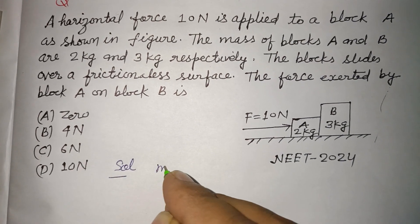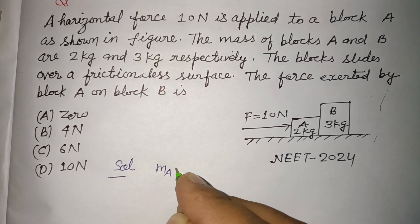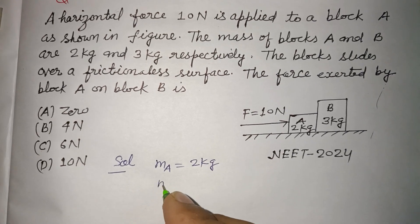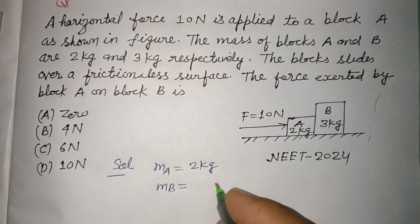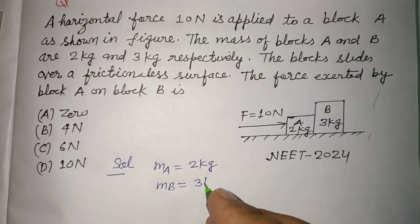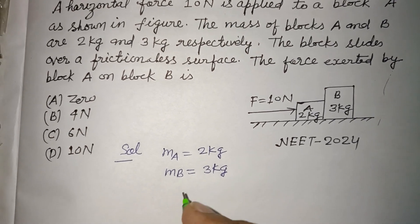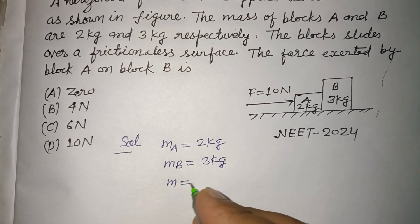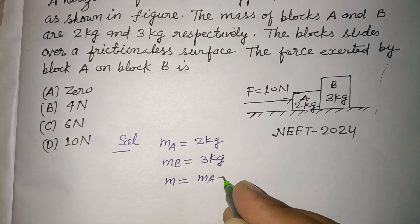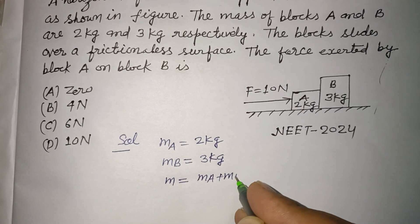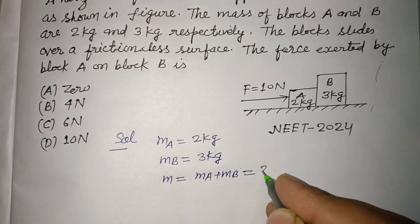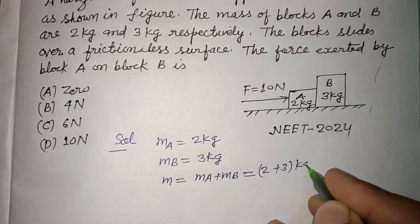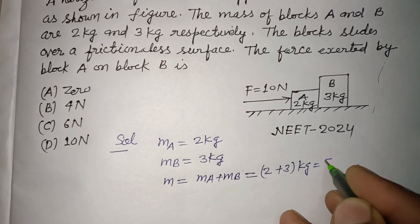Here, mass of A is 2 kg and mass of block B is 3 kg. So the total mass of the system is MA plus MB, that is 2 plus 3 kg, which is 5 kg.